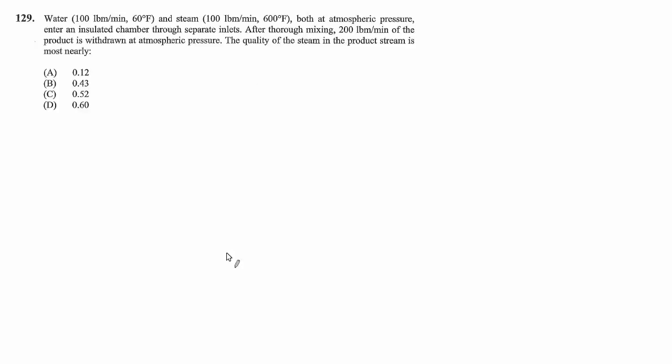Problem 129: Water at 100 pounds per minute and 60°F and steam at 100 pounds per minute and 600°F, both at atmospheric pressure, enter an insulated chamber through separate inlets. After thorough mixing, 200 pounds per minute of the product is withdrawn at atmospheric pressure. The quality of the steam in the product stream is most nearly what?